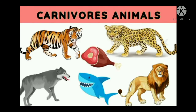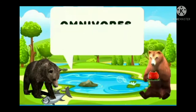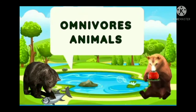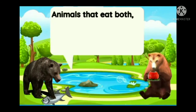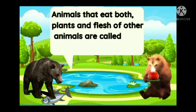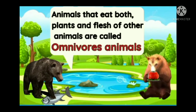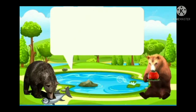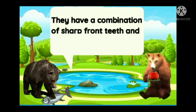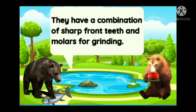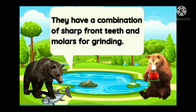Now let's know about the third animal group, that is Omnivore animals. Animals that eat both plants and flesh of other animals are called Omnivore animals. They have a combination of sharp front teeth and molars for grinding.